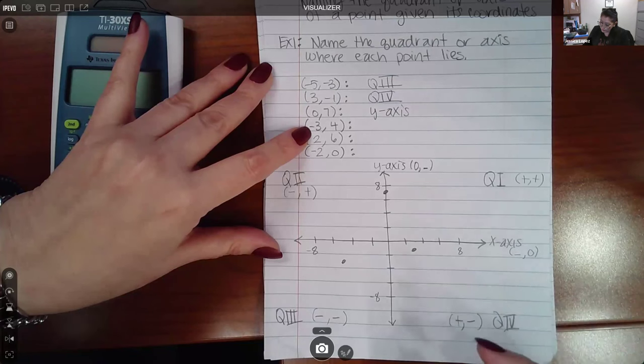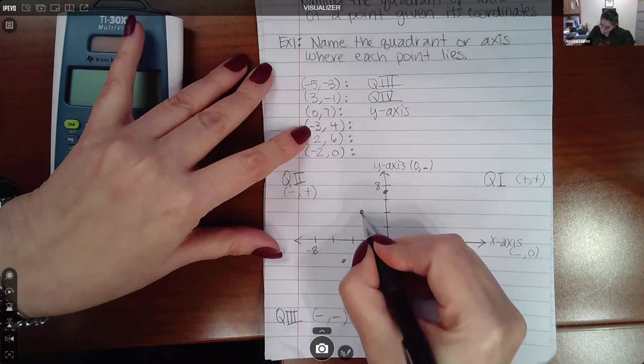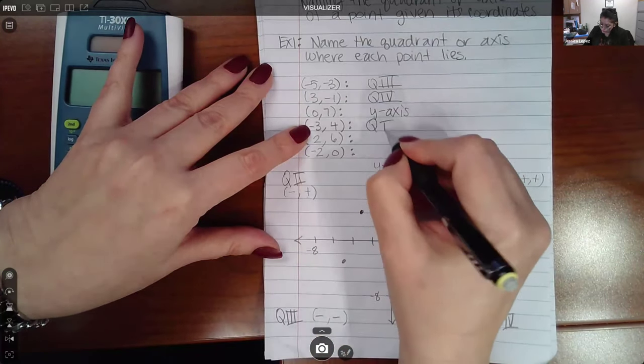Now for here, we have a negative x value, but a positive y value, which puts the coordinate there, and again a negative and a positive would result in quadrant two.